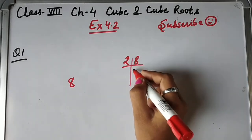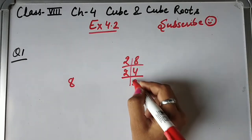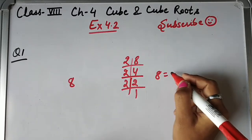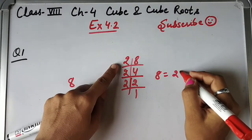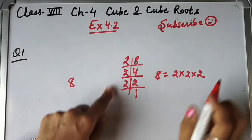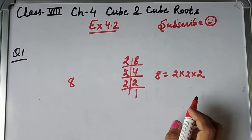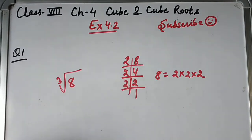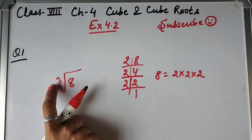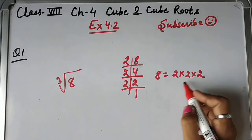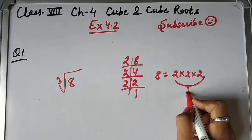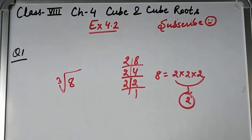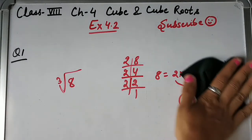We use prime factorization. Dividing 8: 2 divides to give 4, again 2 gives 2, again 2 gives 1. So 8 = 2 × 2 × 2, which is three 2s. We write the cube root sign, and since we have a group of three 2s, one 2 comes out. So the cube root of 8 is 2.